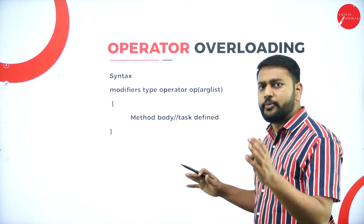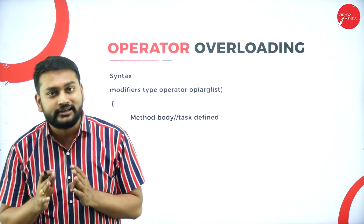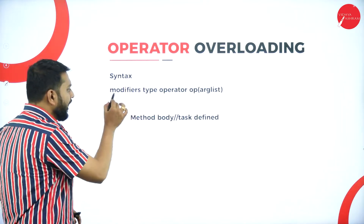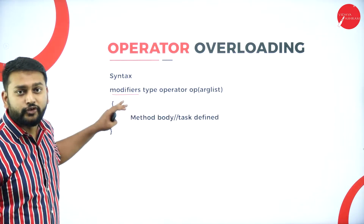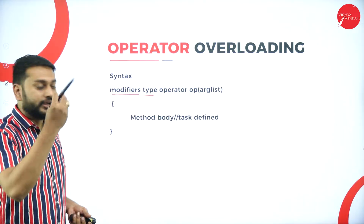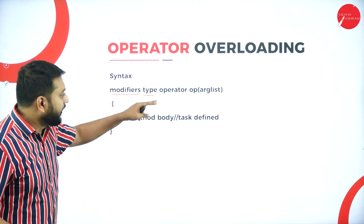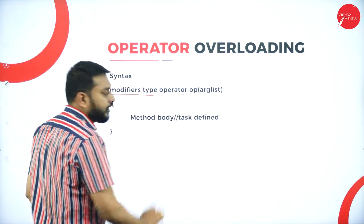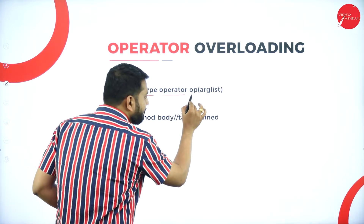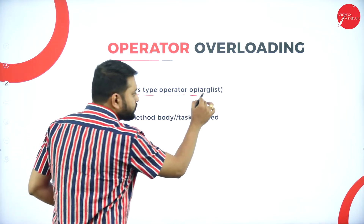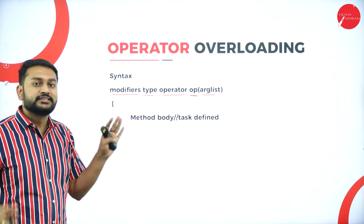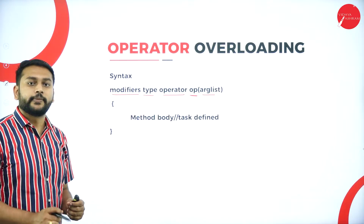How do I perform operator overloading? You should know the syntax to define the method which performs operator overloading. First, you have to write the modifier. Then you have to mention the return type — what type of value you are returning from this method. Then followed by that, you have to use the keyword called 'operator', and then mention which operator you are trying to overload. Then as usual, you will be passing the arguments, and this is the body of that particular method.